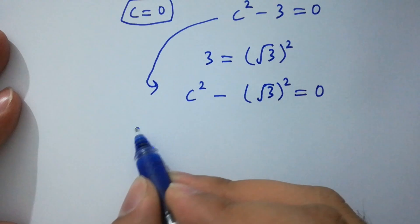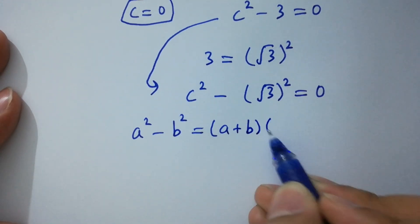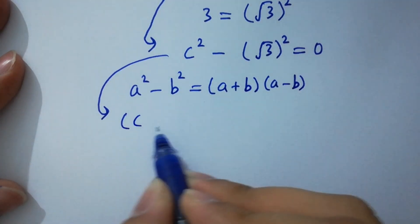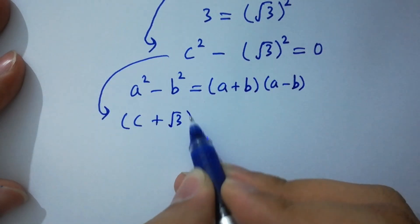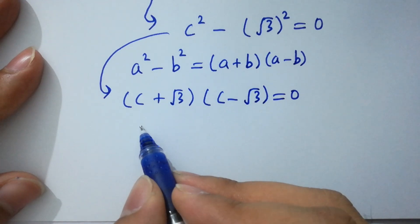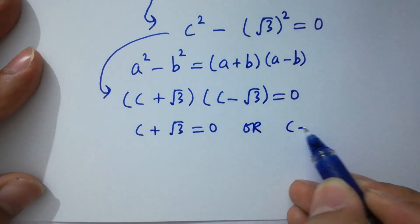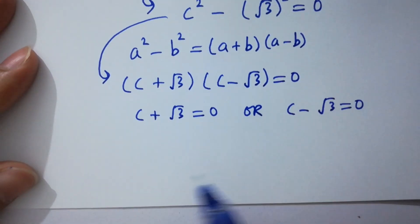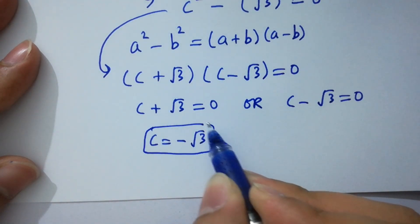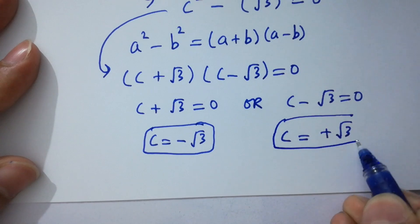Apply the formula a squared minus b squared equals (a plus b)(a minus b). We have (c plus square root of 3)(c minus square root of 3) equal to 0. So either c plus square root of 3 equal to 0, giving c equal to minus square root of 3, or c minus square root of 3 equal to 0, giving c equal to plus square root of 3.